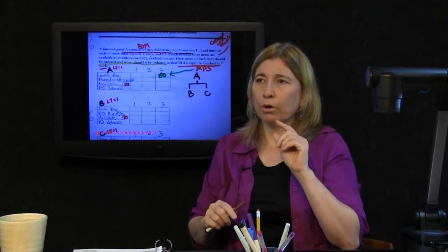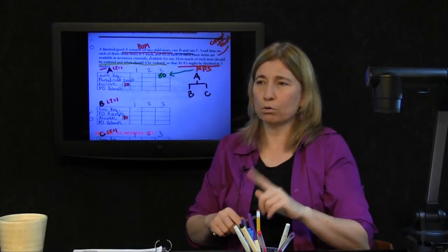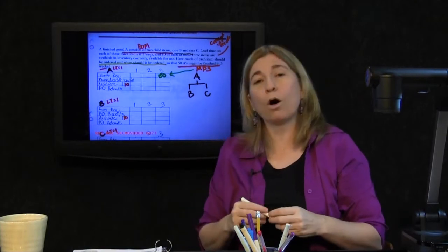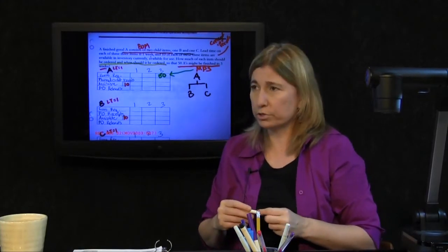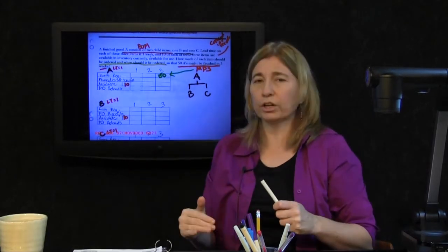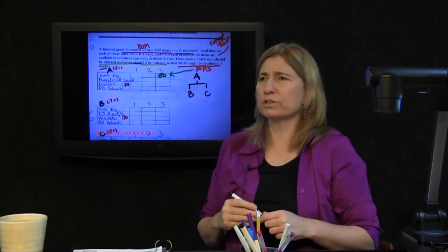Fill out all the records on level zero. Or, calculate the planned order releases for all level zero items. Which is the same thing. Calculate the planned order releases, the bottom line. It's just fill out the record.